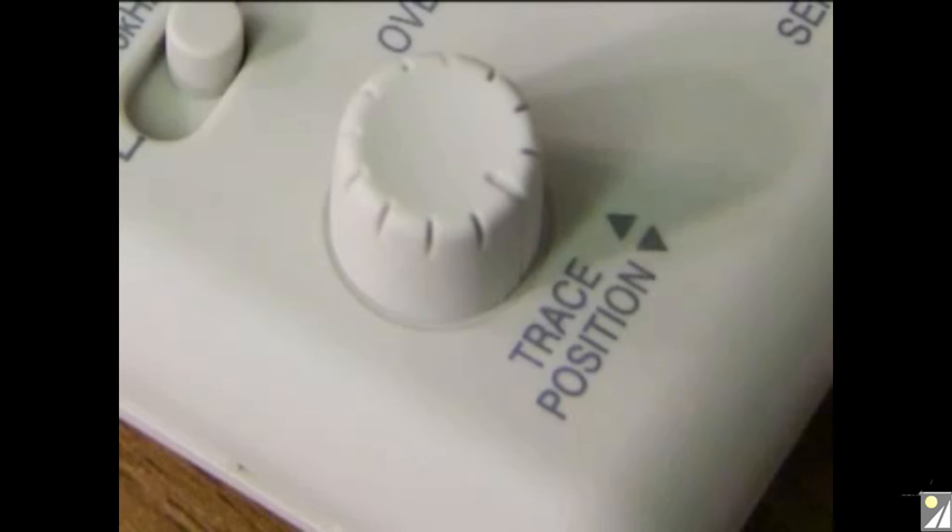On the left hand side is the trace position control. This is used to null out unwanted DC effects or to offset the trace on the scope. It is only relevant to DC measurements.